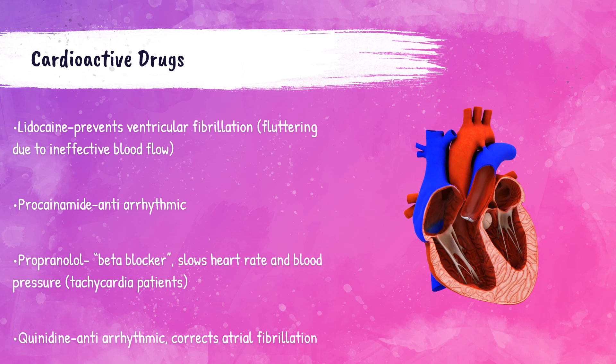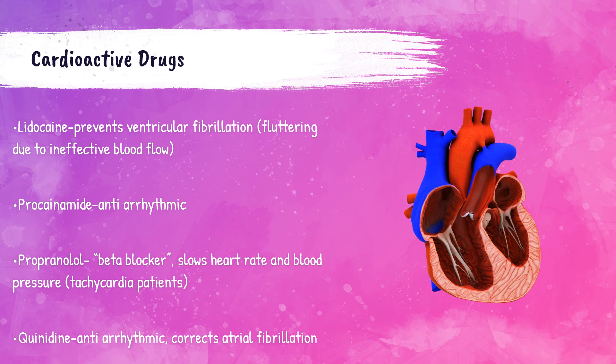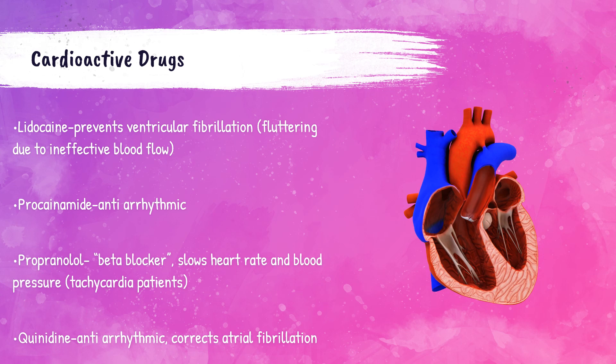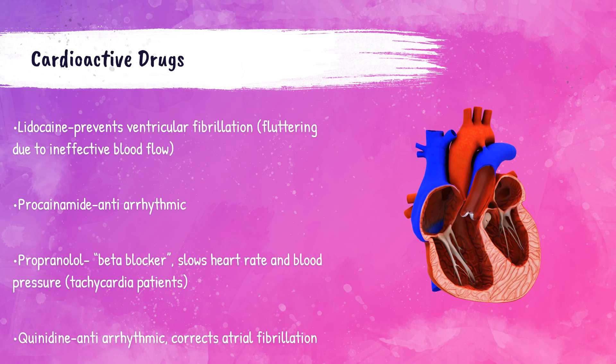Other cardioactive drugs include lidocaine, procainamide, propranolol, and quinidine. Lidocaine is an anesthetic used in patients that have ventricular fibrillation, when the ventricles flutter due to ineffective flow of blood in the heart. Procainamide is another anesthetic used to prevent arrhythmias or irregular beats of the heart. Propranolol slows down a patient's heart rate and helps reduce blood pressure. Quinidine is an antiarrhythmic medication used to help patients correct atrial fibrillation.